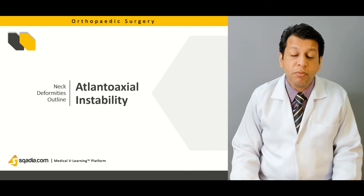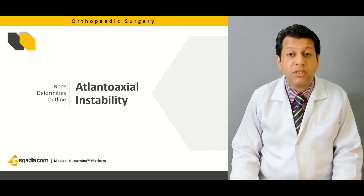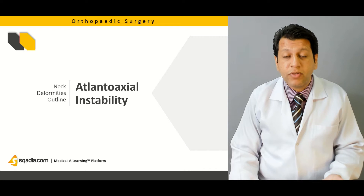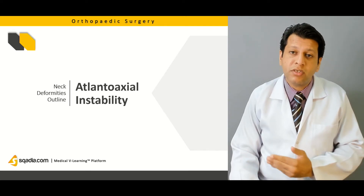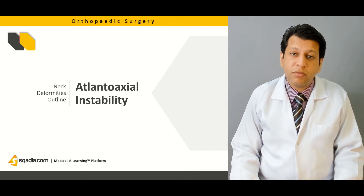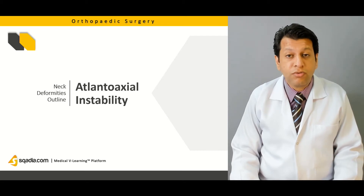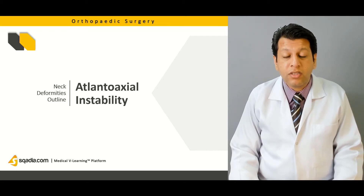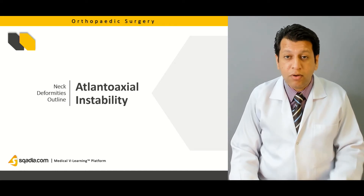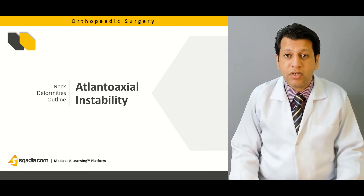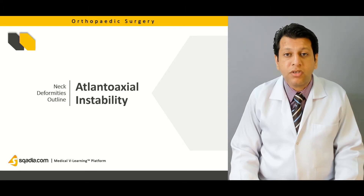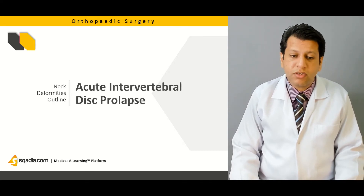We will also briefly discuss atlanto-axial rotary instability, which can be present in children as well as adults. It is most commonly associated with patients with rheumatoid arthritis, Down syndrome, or in children with Morquio syndrome. We will briefly touch on the different types and how we can correct it, and what treatment is directed at atlanto-axial instability.